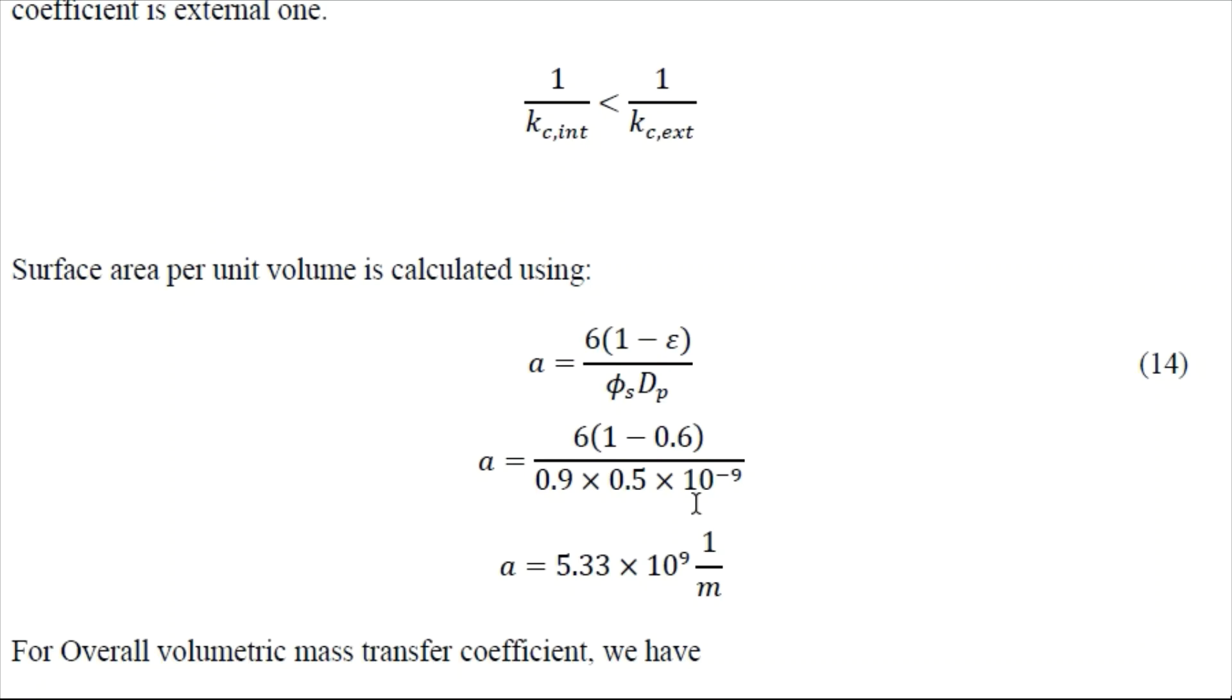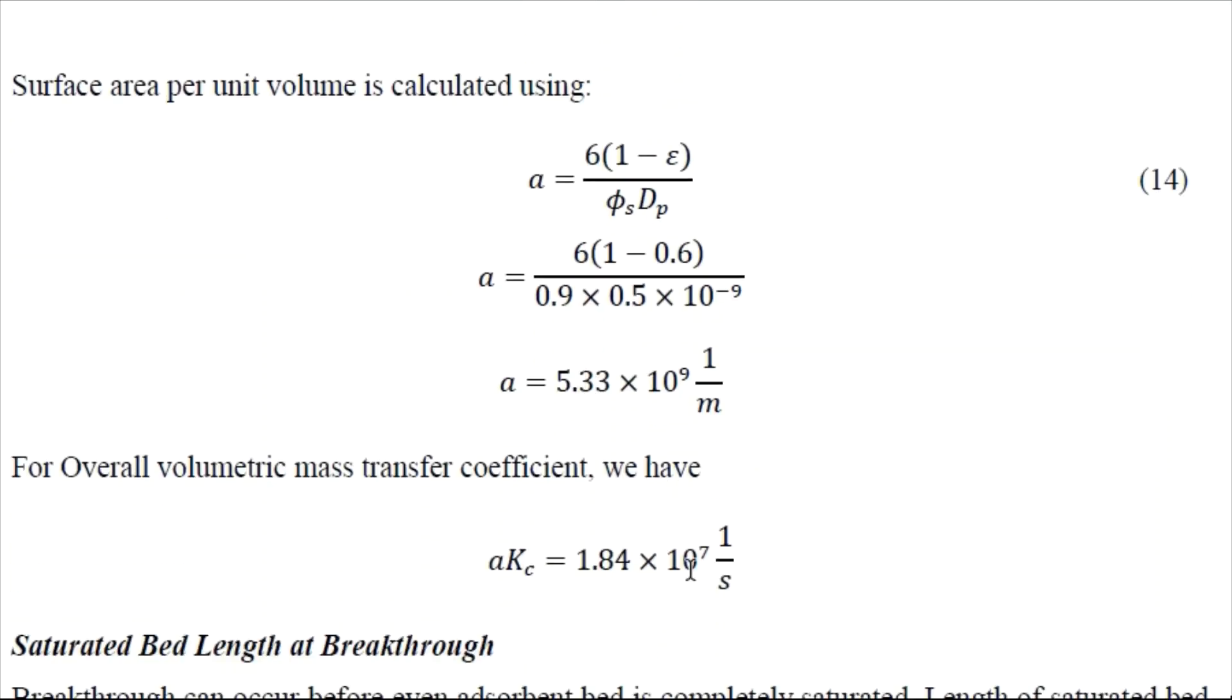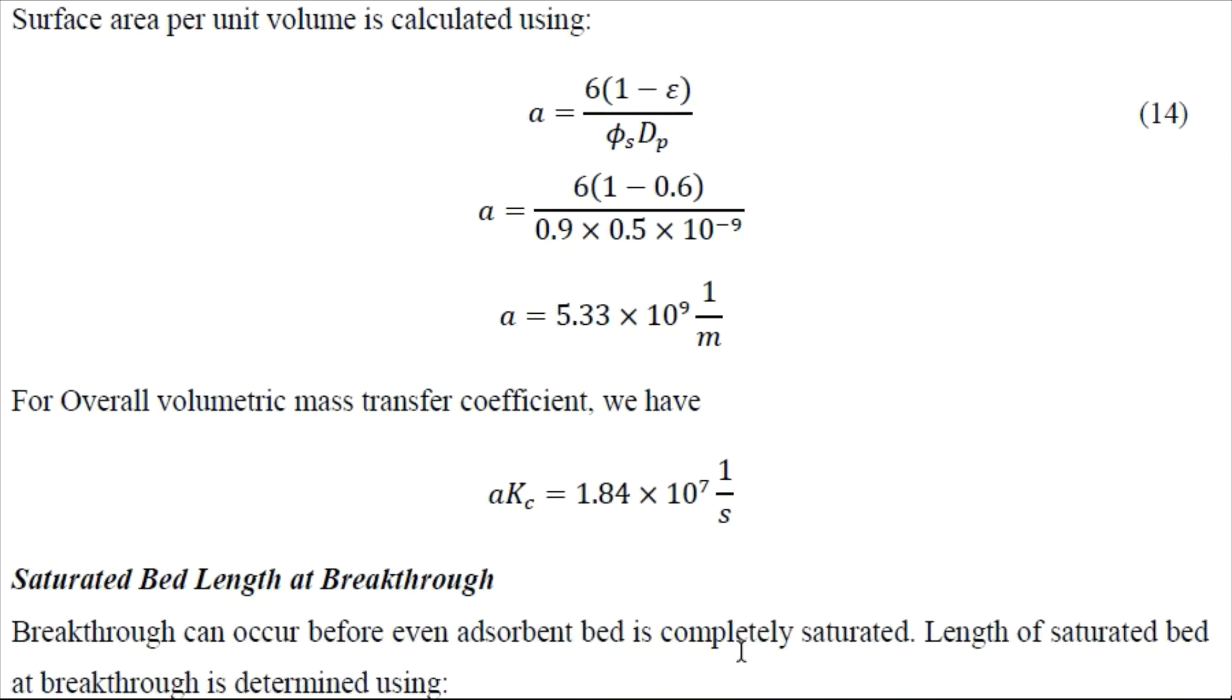Now we can move forward to calculate the overall volumetric mass transfer coefficient. For which we need this A value that is surface area per unit volume. So it is given by 6 into 1 minus porosity over sphericity into particle diameter. So we can just multiply this A value with Kc value to obtain the overall volumetric mass transfer coefficient.